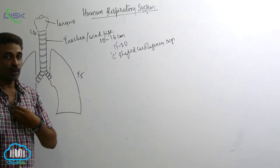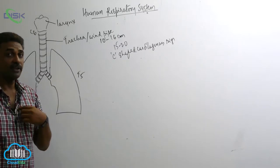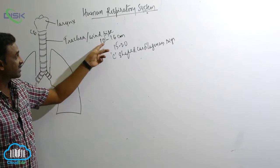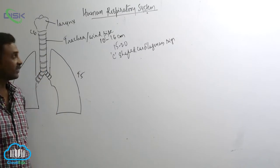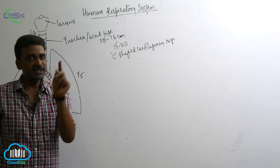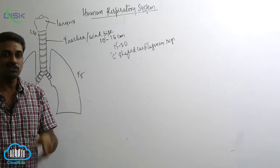It is present in the mid ventral thoracic cavity and it extends some 10 to 16 centimeters in length and it is supported by some 15 to 20 C-shaped cartilaginous rings.